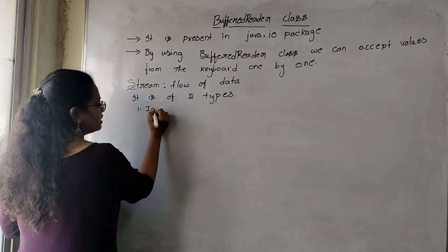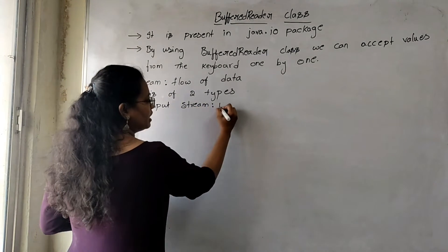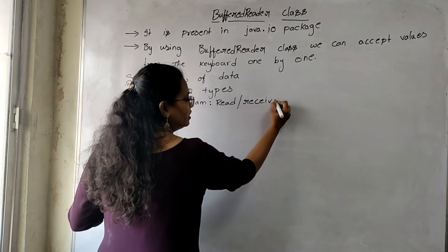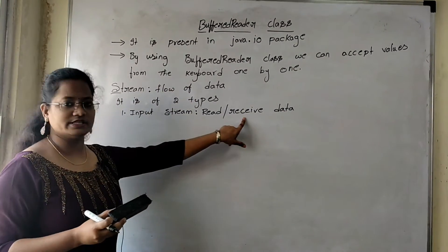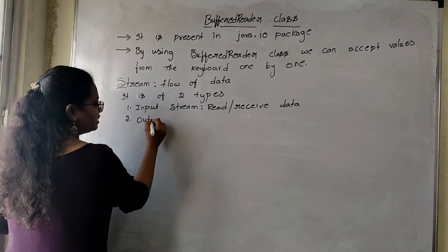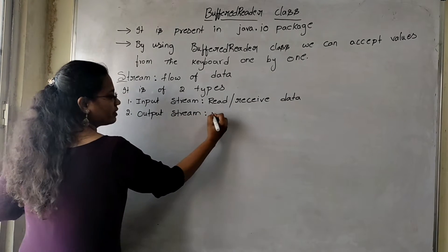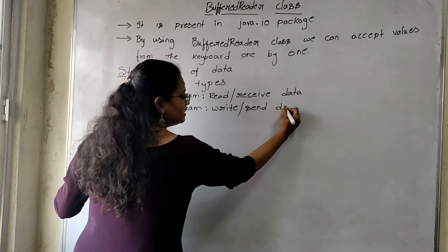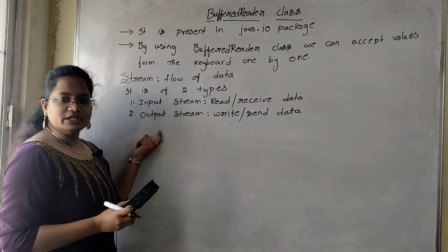The first one is Input Stream. Input Stream is nothing but read or receive the data. The data which is coming from another place, it will be read or it can receive it — then we are calling it as an Input Stream. The second one is Output Stream — write or send data to another place. Then we are going to call it as an Output Stream.